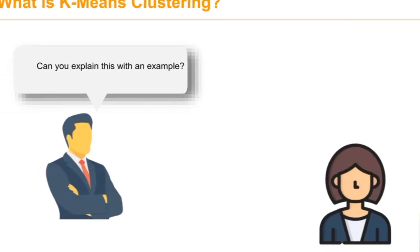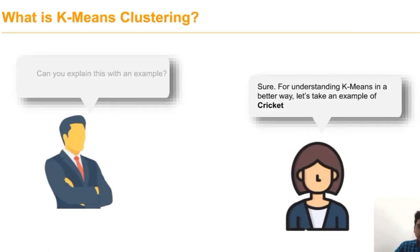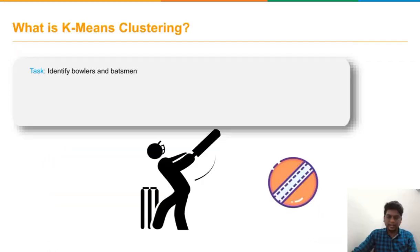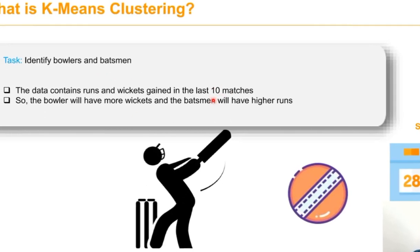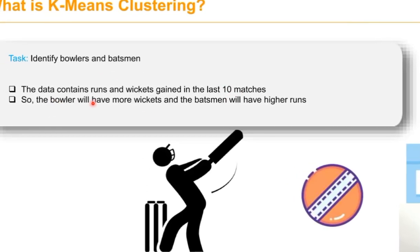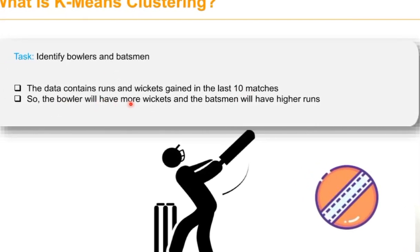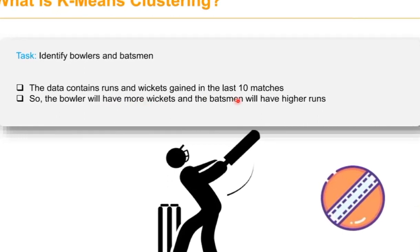Let us consider a simple example. Take the game cricket. In cricket we have to identify both the batsmen and bowlers. Suppose the data contains both the runs and wickets in the previous 10 matches. The bowler normally will have more wickets and the batsmen have most number of runs.